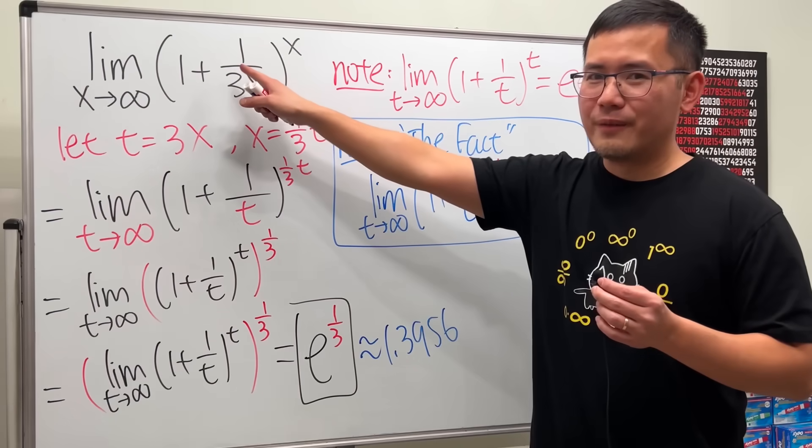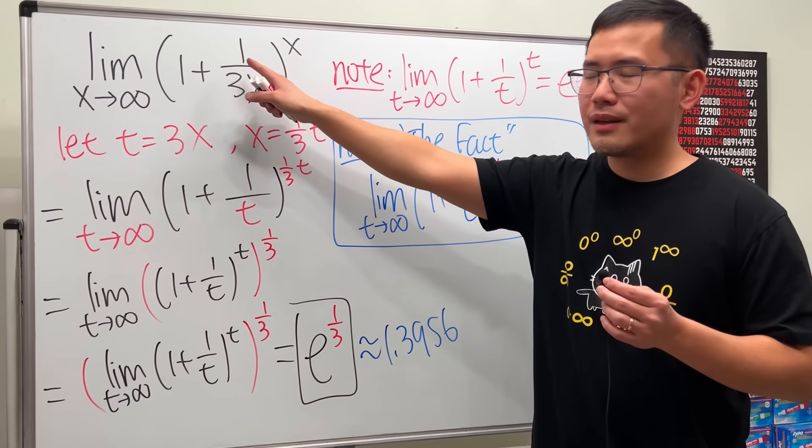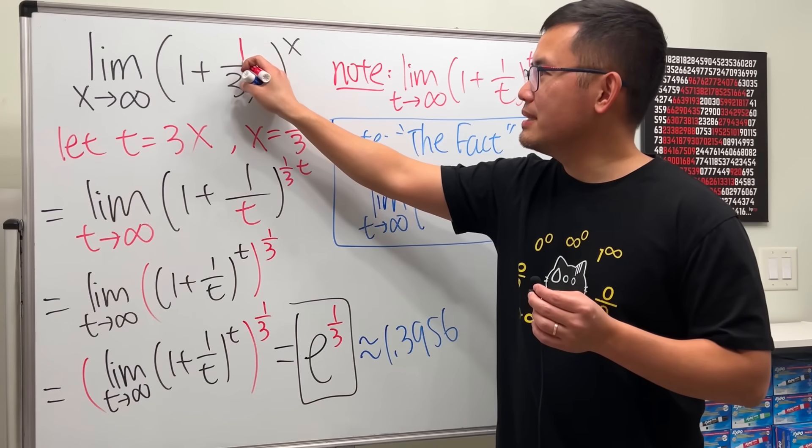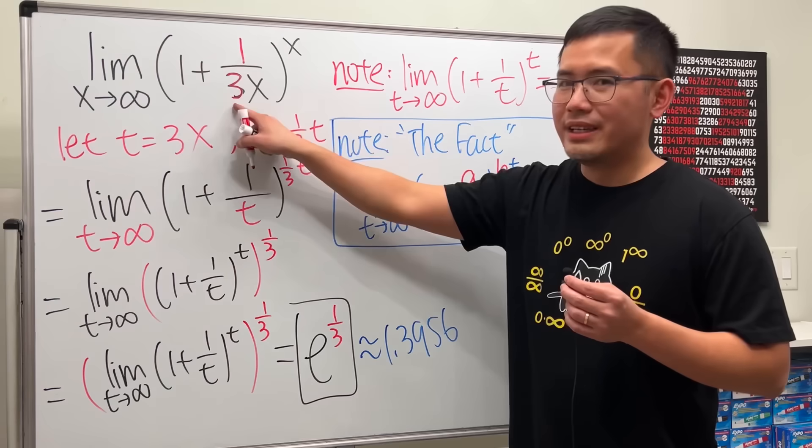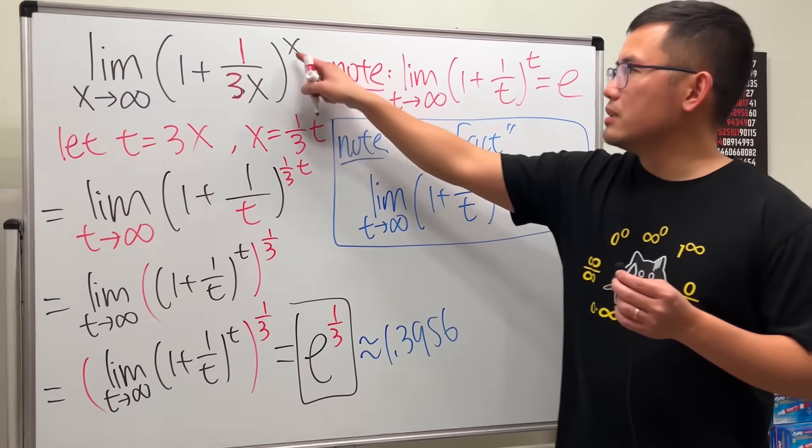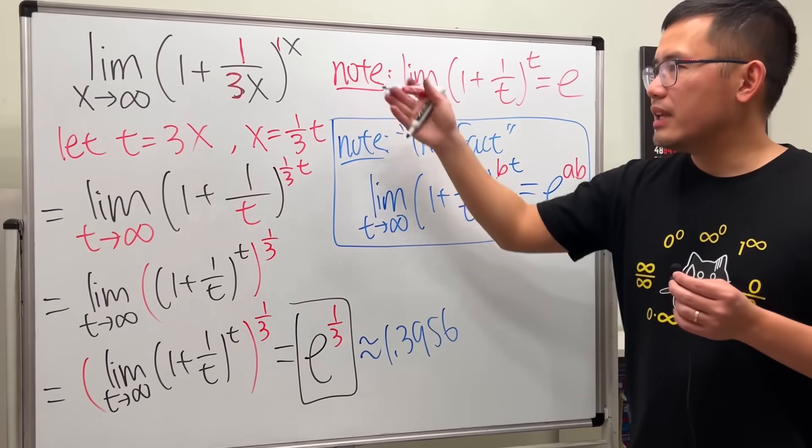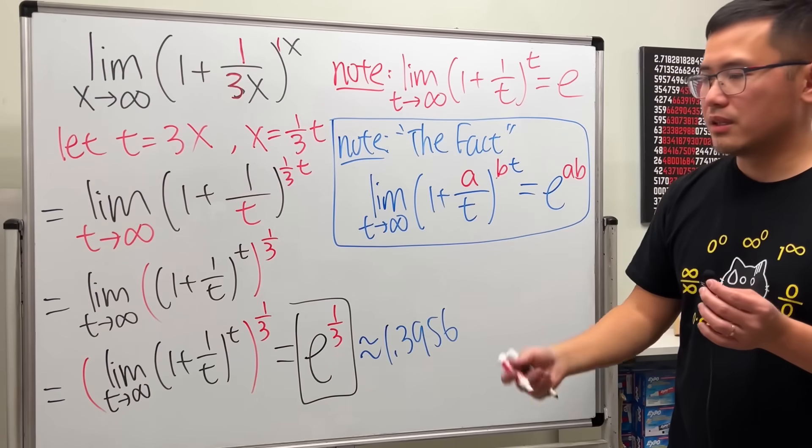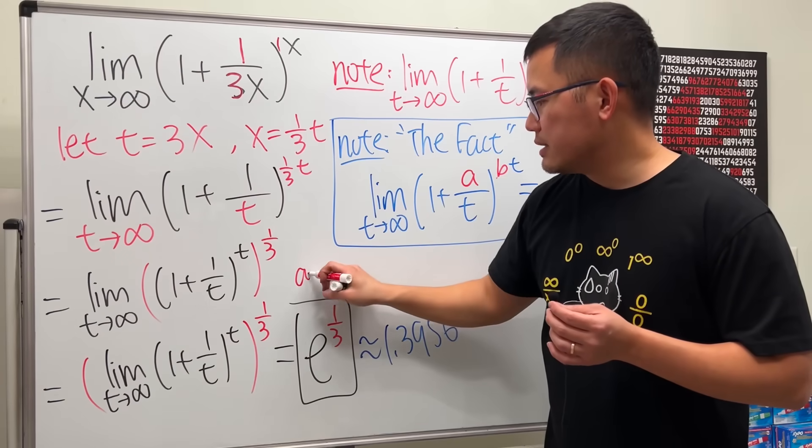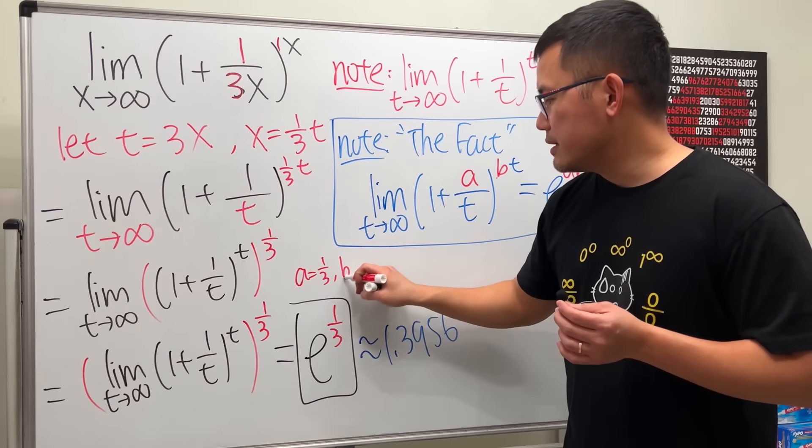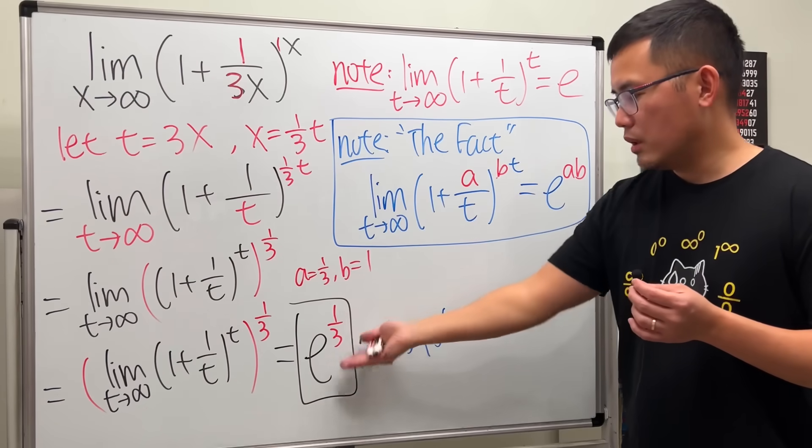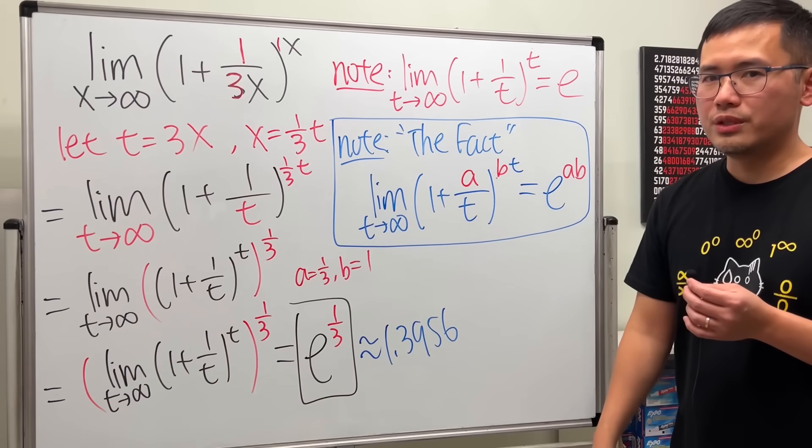So if you take a look right here, what's our a? Well, we have 1 over 3 because you can just put this up. And then, of course, b is just equal to 1. And then over there we have x. Right here we have t. Doesn't matter. So this, you can just say because a equals 1 third and b equals 1, the result for that is just e to the 1 over 3 times 1. Of course, it's e to the 1 over 3. That's it.